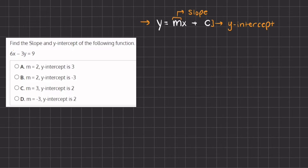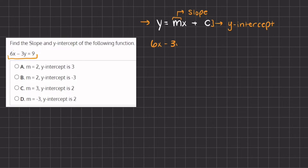In order to find our slope and our y-intercept, we have a linear equation. We're going to use this example here: 6x minus 3y equals 9.